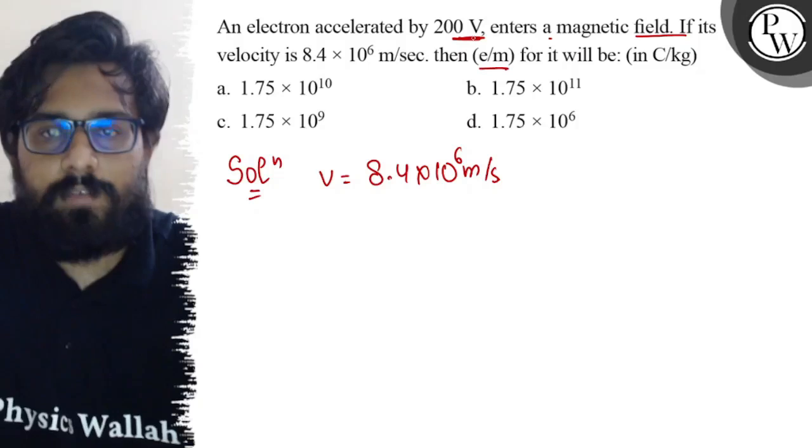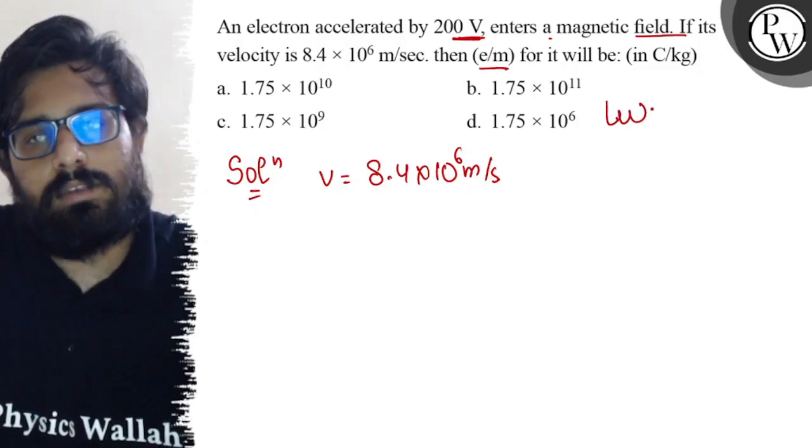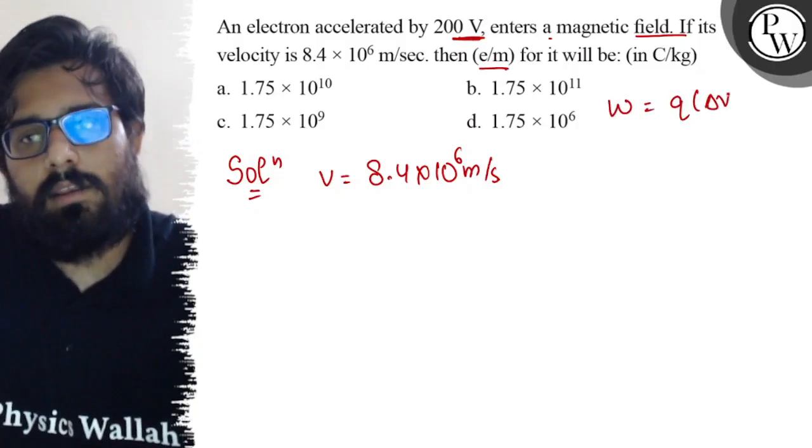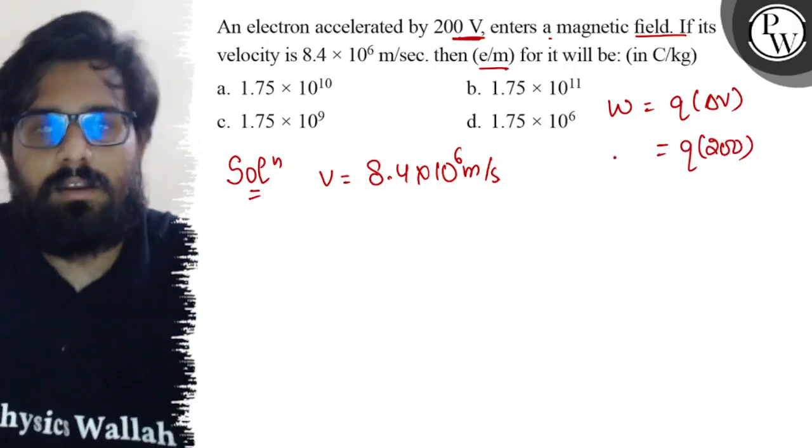You have a potential difference. We know that W equals q times delta V. You have a delta V, so it can be written as q times 200.